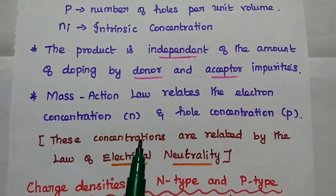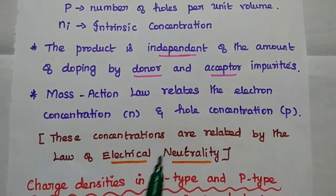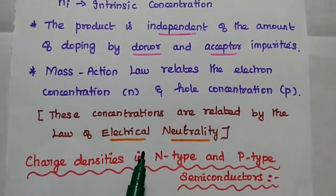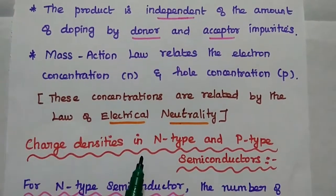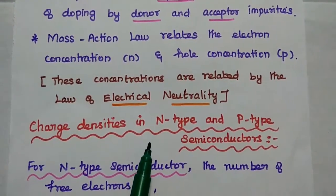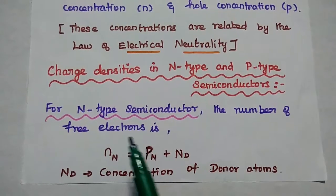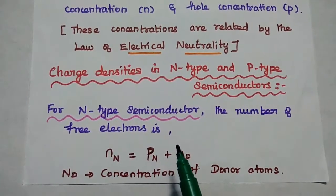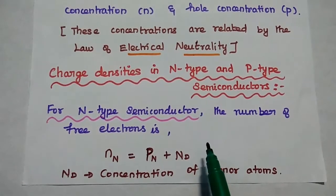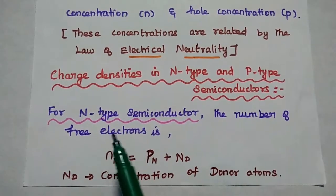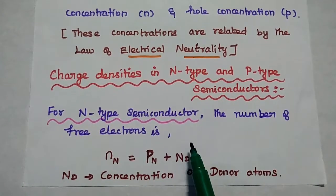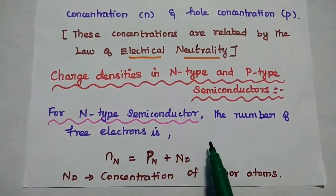These concentrations are also related by the law of electrical neutrality. Here we are going to consider the charge densities in n-type and p-type semiconductors. In case of extrinsic semiconductors, we have to consider only the majority carriers. An n-type semiconductor can be obtained by adding donor atoms to the pure semiconductor.